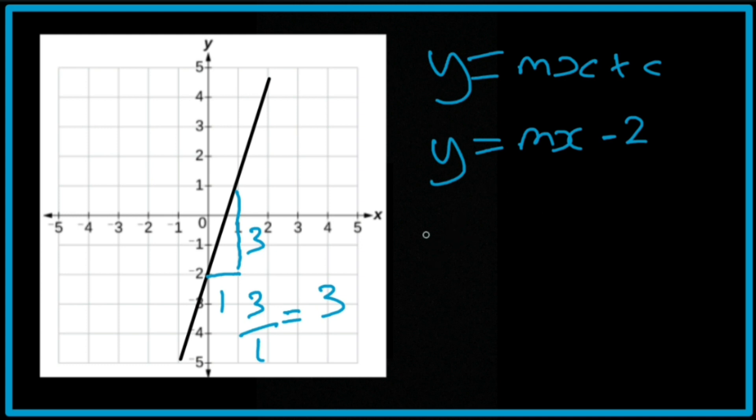Therefore, my gradient is 3. So it's going to be y equals 3x minus 2. That's the final answer.